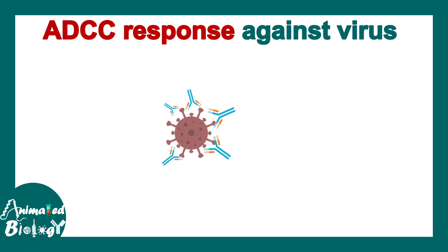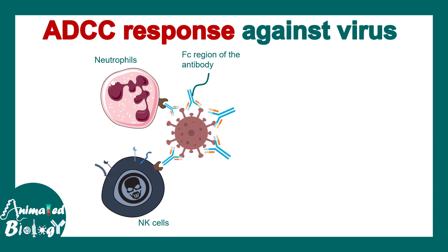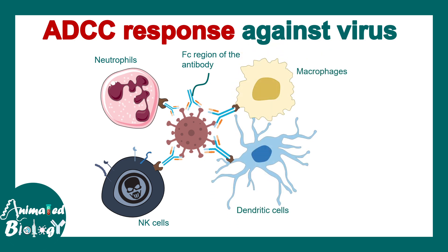Viruses can also be opsonized by antibodies, and these antibodies can be recognized by the Fc region of the Fc receptor. Thereby, these opsonized viruses or bacteria can be taken up by NK cells, dendritic cells, and many other cell types — so they can participate in the ADCC response.